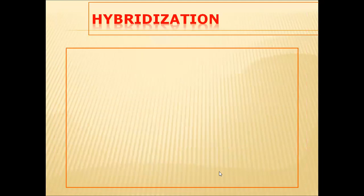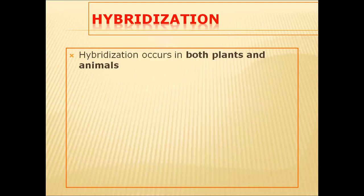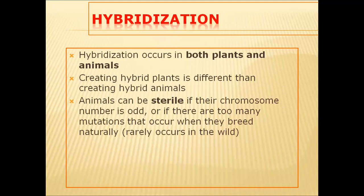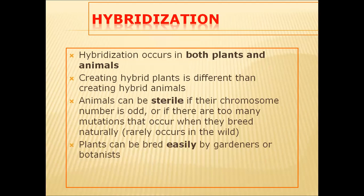Hybridization is very common in plants but not in animals. Creating hybrid plants is easy, but creating hybrid animals is not easy. Animals can be sterile if their chromosome number is odd — if two different animals have different chromosome numbers or chromosome sets, they can result in sterile offspring. Mutations can also become a problem in the offspring, and they are rare in wild animals but more common in hybrid animals.